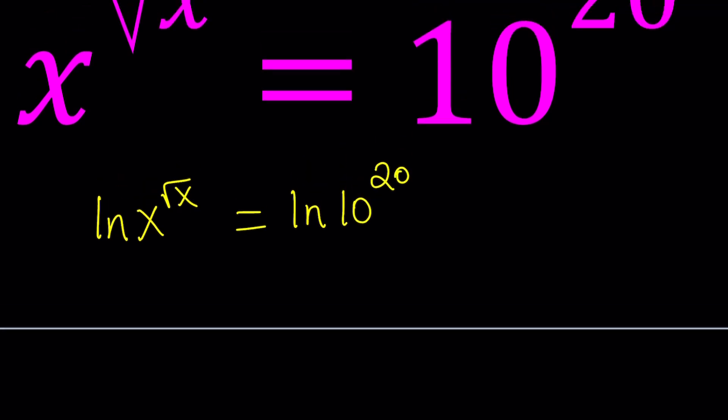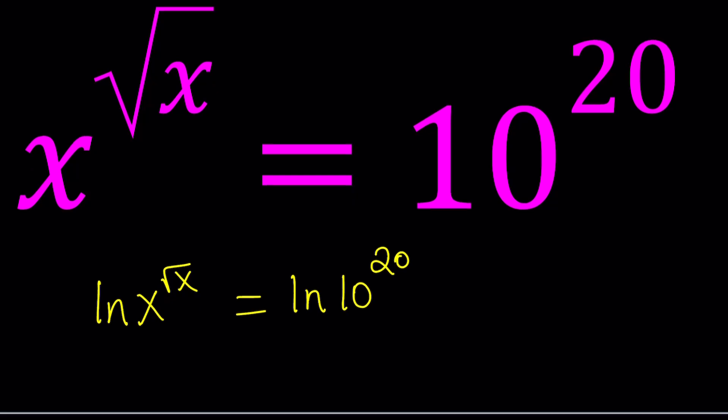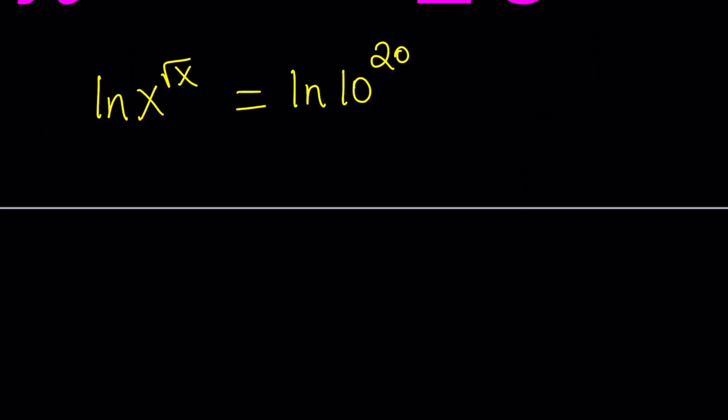So they're equal. Now, since we logged both sides, we can go ahead and move the exponents to the front. That will become square root of x ln x, and on the right hand side we're going to get 20 times ln 10.